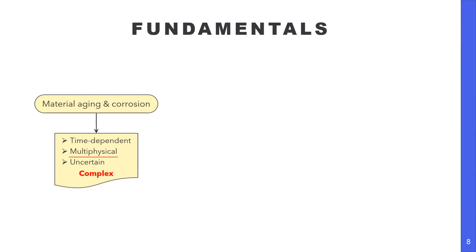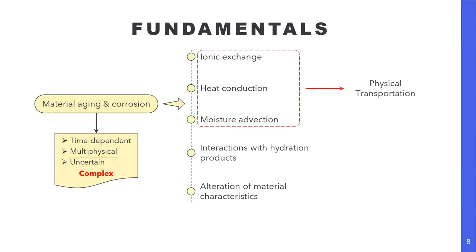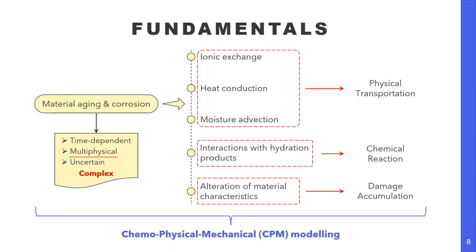Speaking of its multi-physical nature: the porous medium of concrete is always susceptible to ionic exchange, heat conduction, and moisture advection when in contact with the external environment. All these phenomena cause interaction with hydration products that eventually alter overall material characteristics. To sum it up, I put them into three aspects: physical transportation, chemical reaction, and damage accumulation. To this end, an integrated method free from empirical models and able to simulate the time-dependent aging-corrosion process is introduced here — I call it chemo-physical modeling, the CPM model.